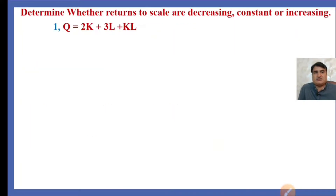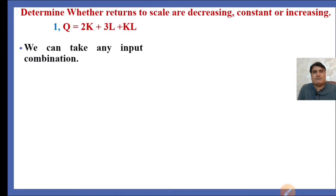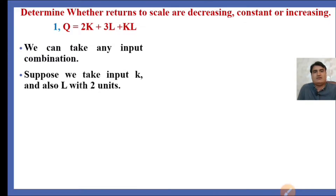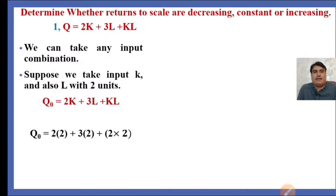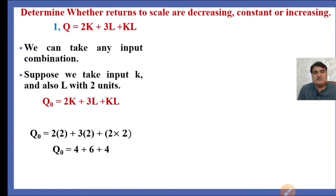Taking the first production function, Q = 2K + 3L + KL. We are using a simple method where we take any input combination. Suppose we take K and L equal to 2 units each. By plugging K=2 and L=2 into the equation — 2×2 + 3×2 + 2×2 — we get Q0, the original output, equal to 14 units.